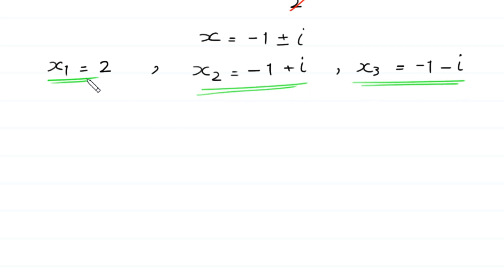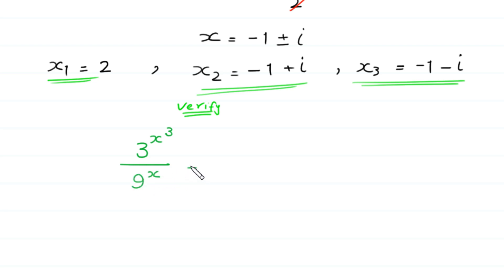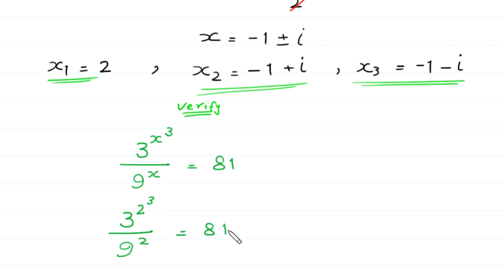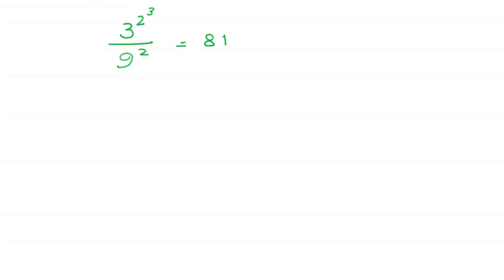Now let us verify the real value x equals 2. To verify, we put this value into the original equation: 3 to the power x cubed divided by 9 to the power x equals 81. Substituting x equals 2: 3 to the power 2 cubed, which is 8, divided by 9 to the power 2. We write 9 as 3 squared, whole to the power 2, equal to 81.